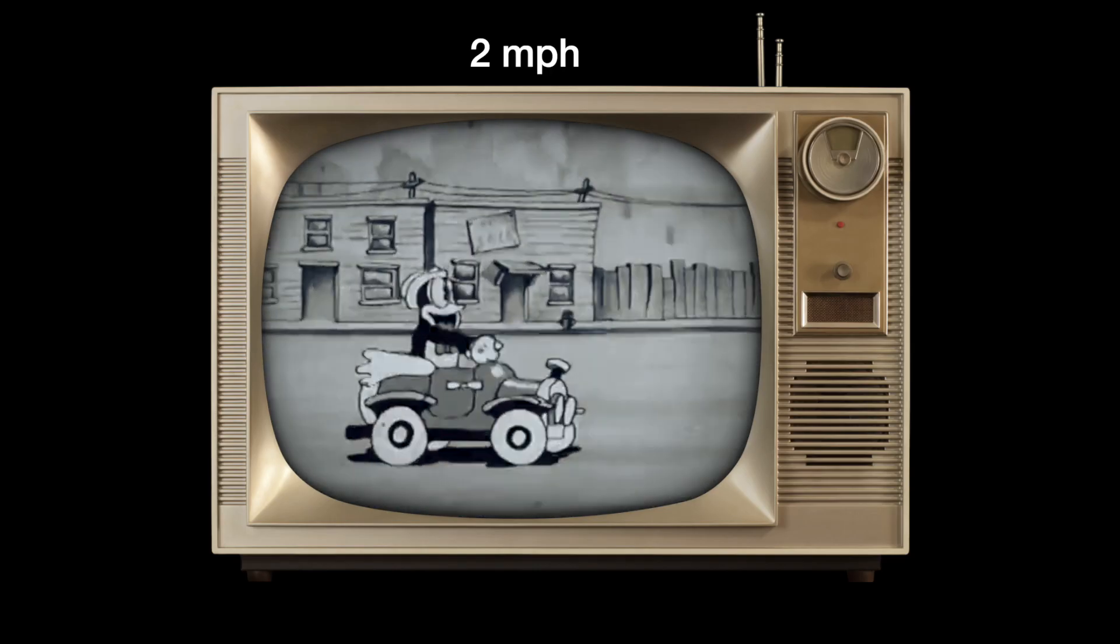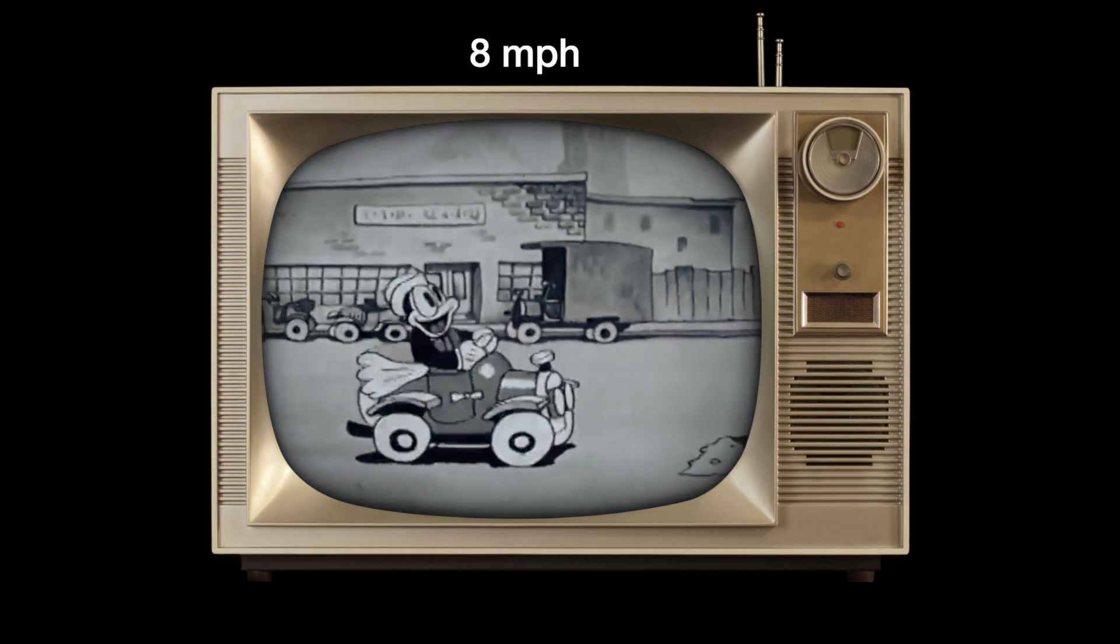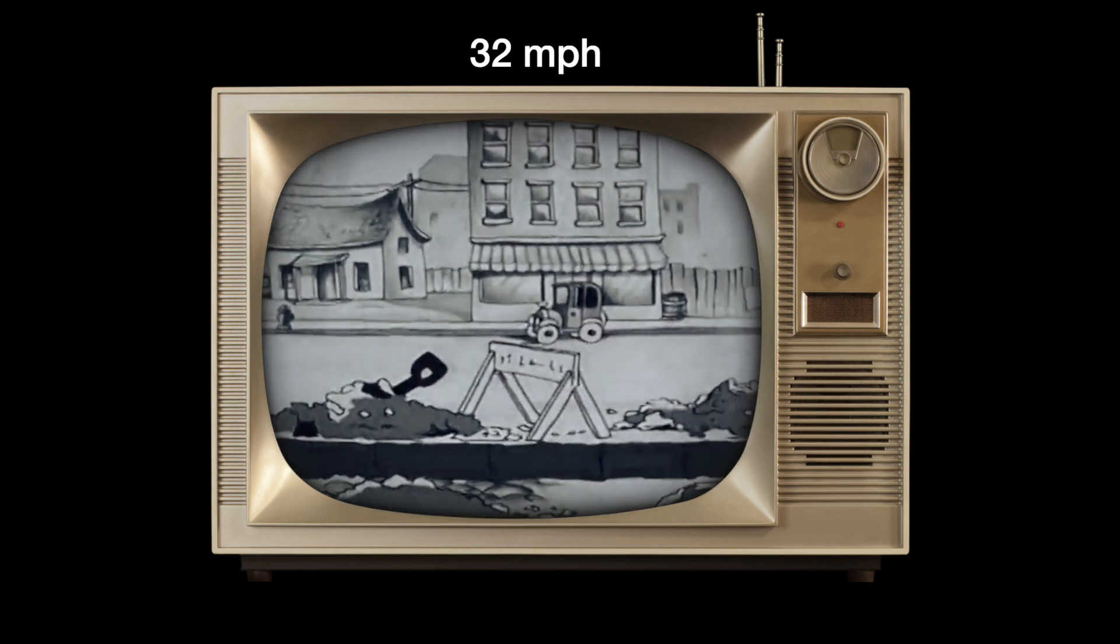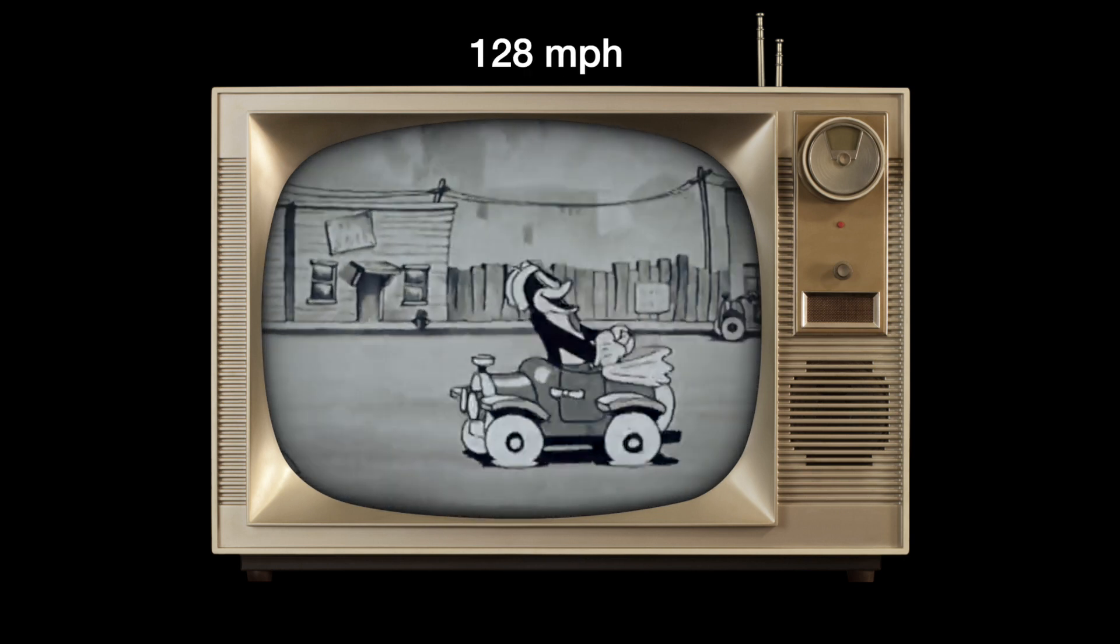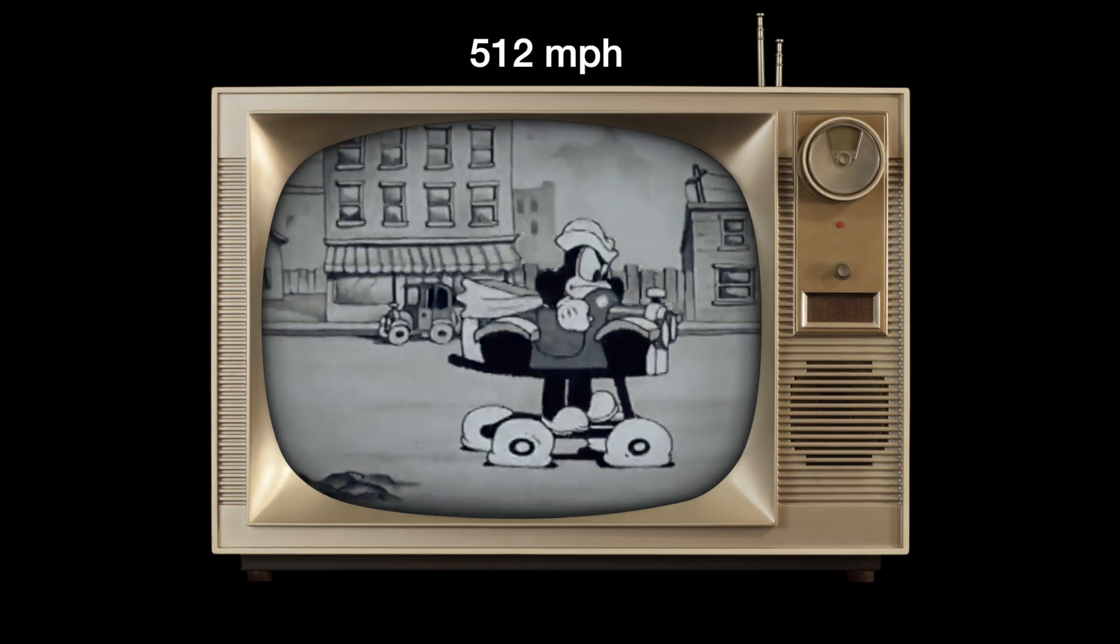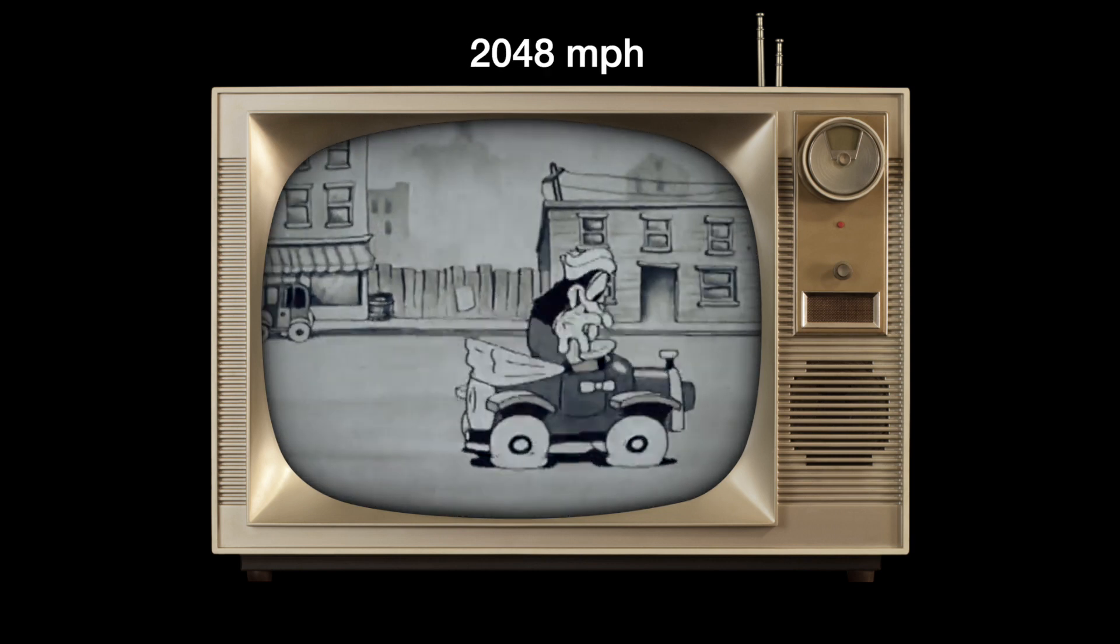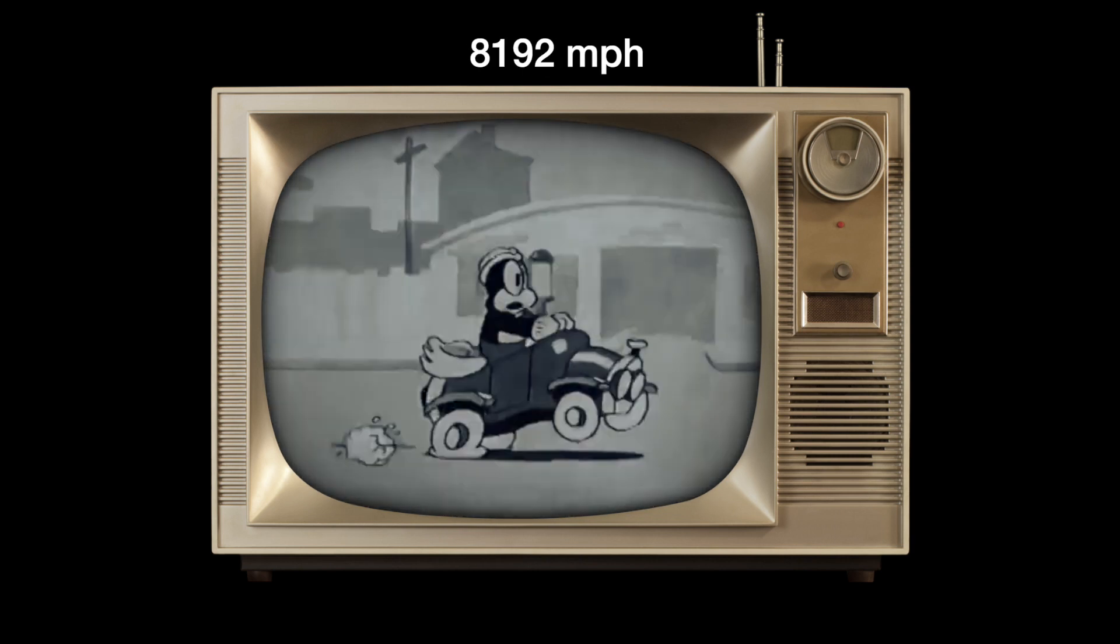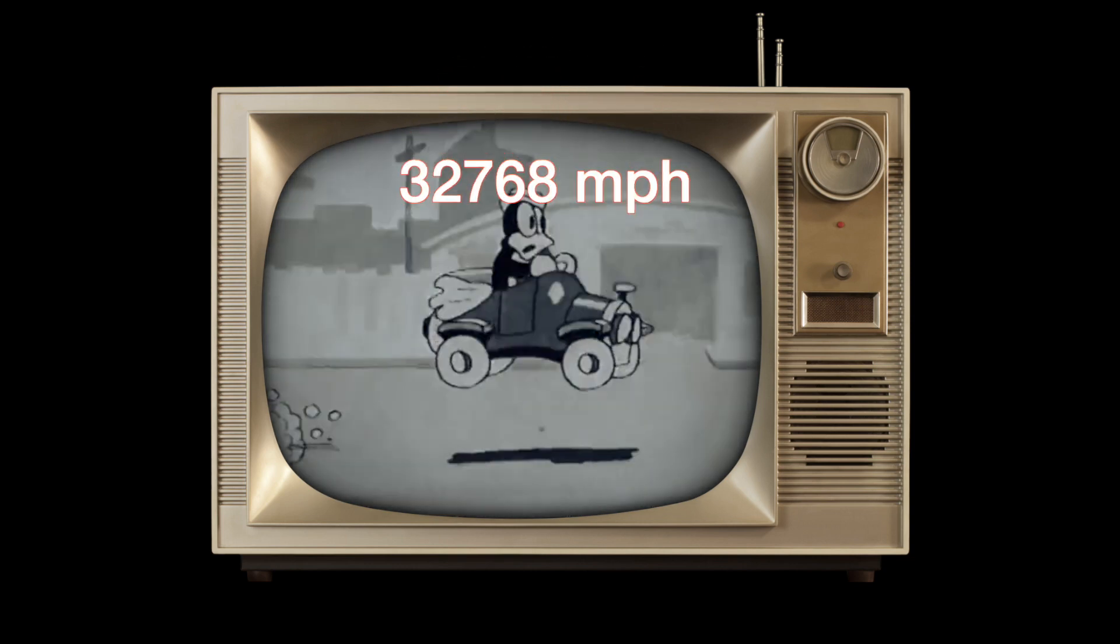The curve starts somewhat shallow, but it starts to grow dramatically and gets bigger faster and faster. Let's do a little exercise. Suppose you are driving down the road at 1 mile per hour and double your speed every minute. You will be going quite slow for the first few minutes, but it starts to get extremely fast at some point, and after 15 minutes you will be going 32,768 miles per hour.